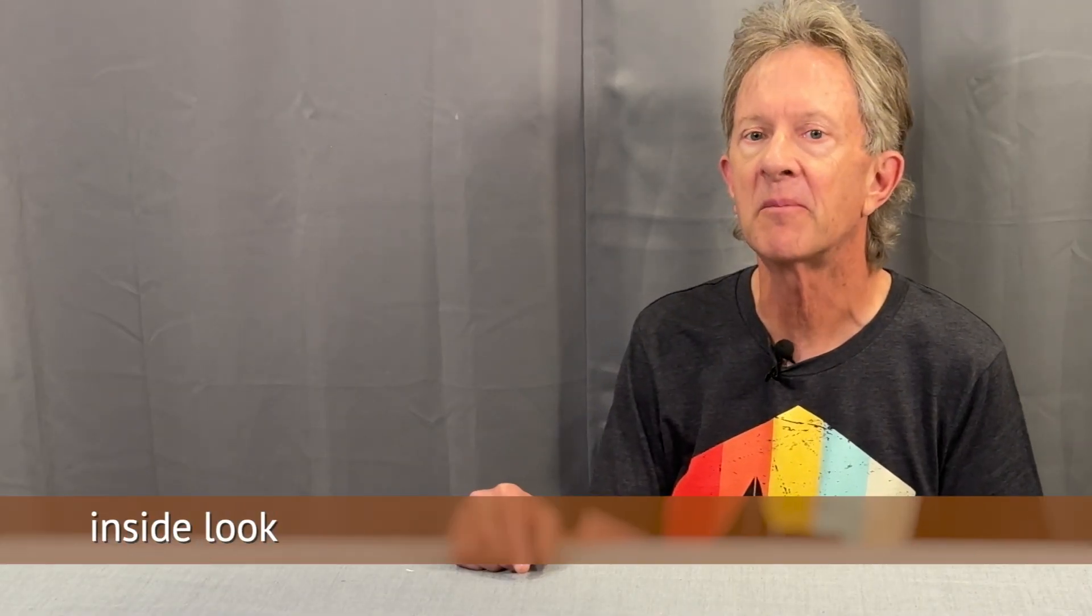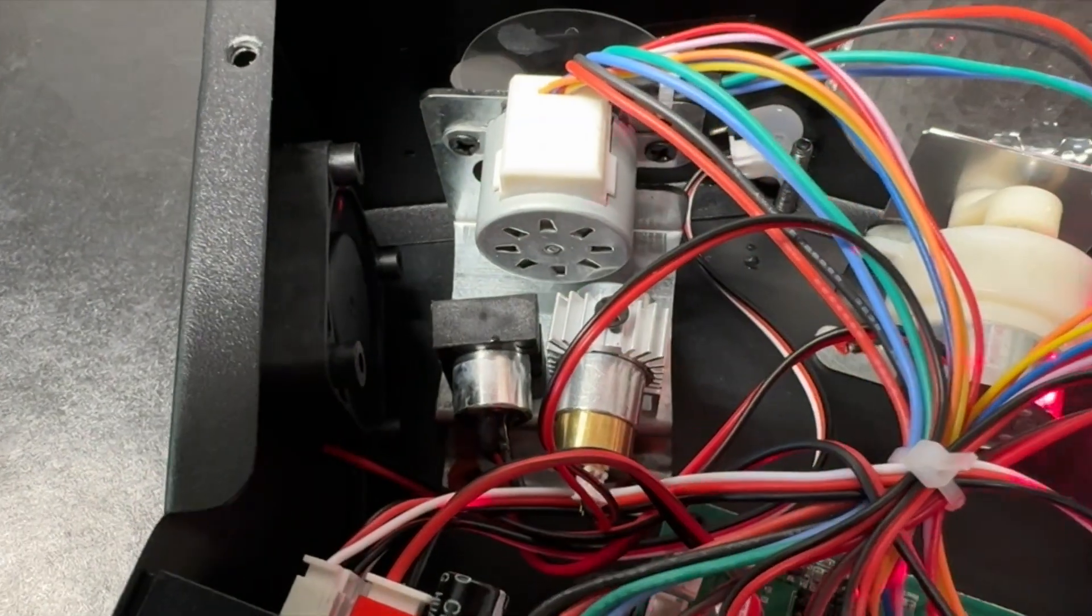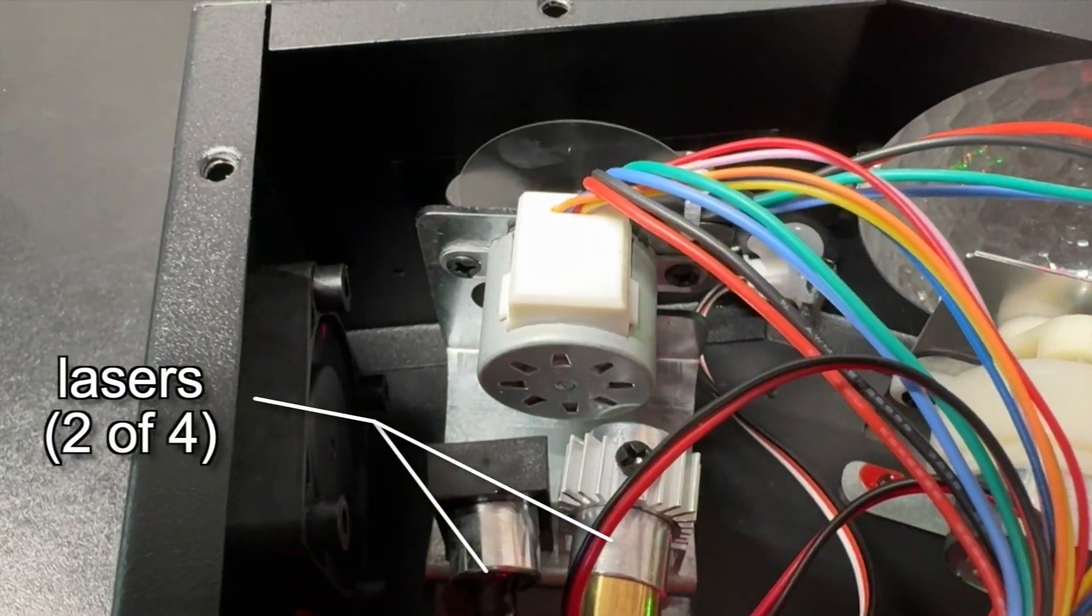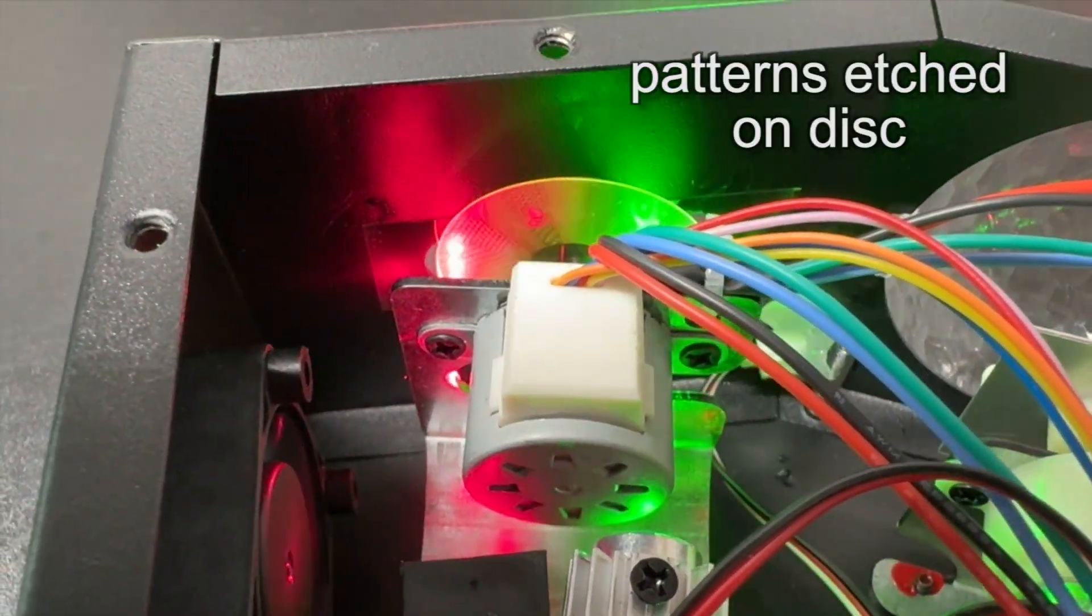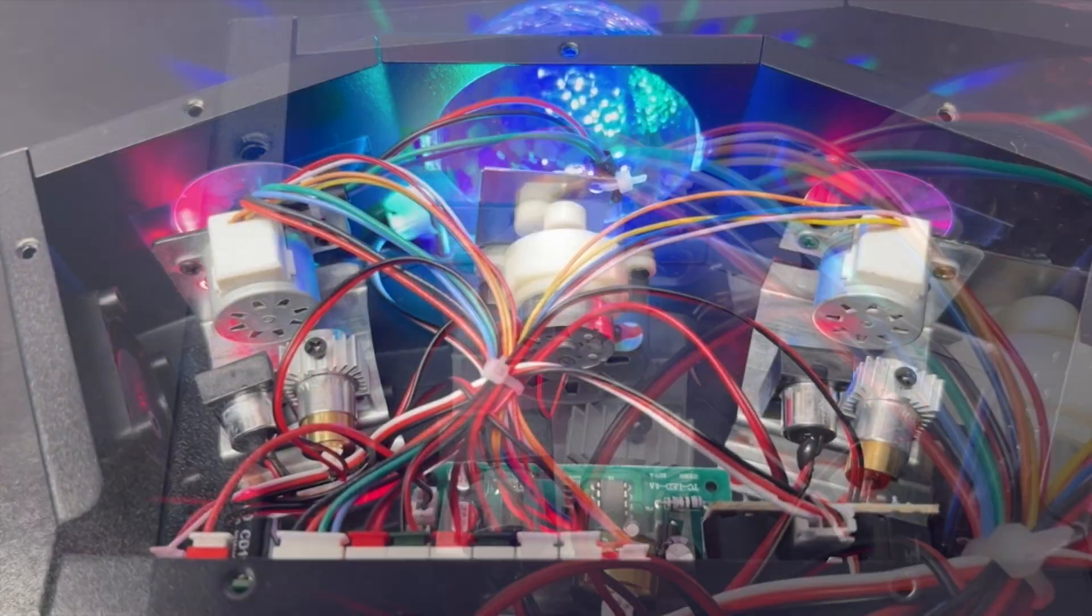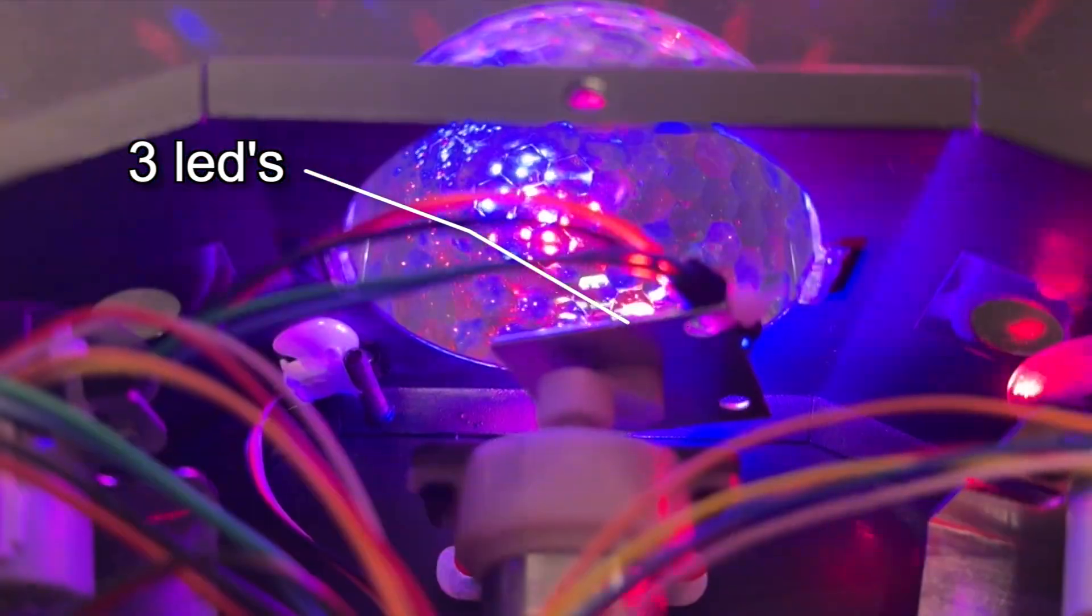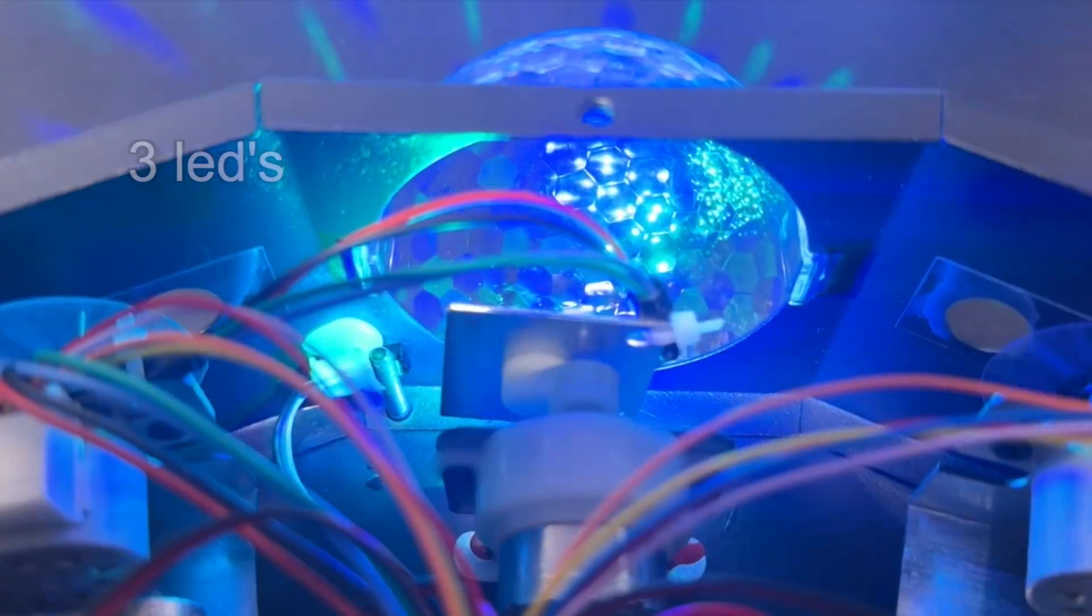Now normally I don't take my lights apart unless I have to but I was curious and I wanted to show the inside of this thing. And you can see how the lasers project through these rotating discs to make their patterns, and how the three LEDs are mounted to this circuit board which travels in a circle behind the lens.